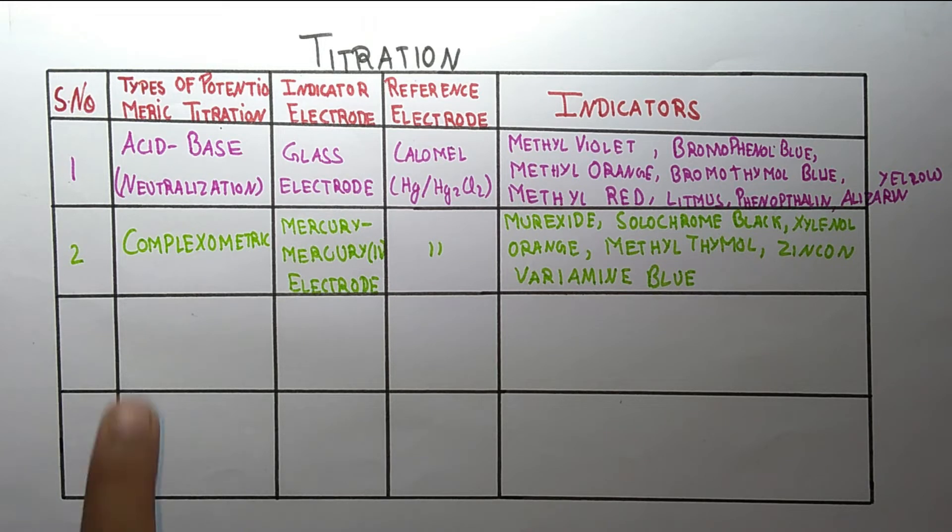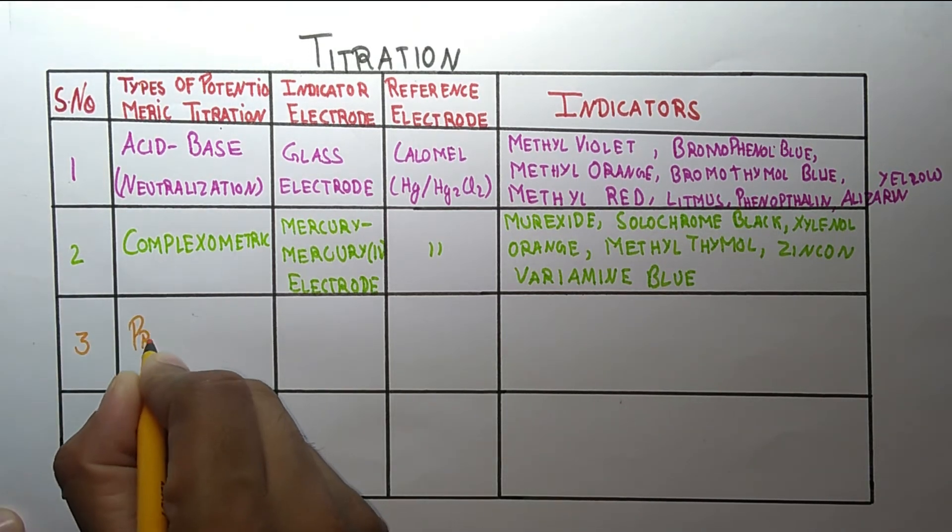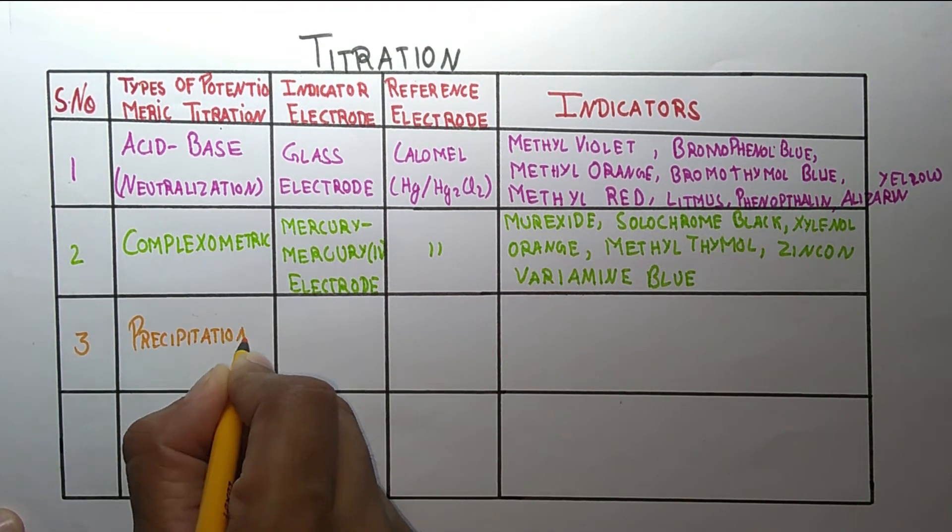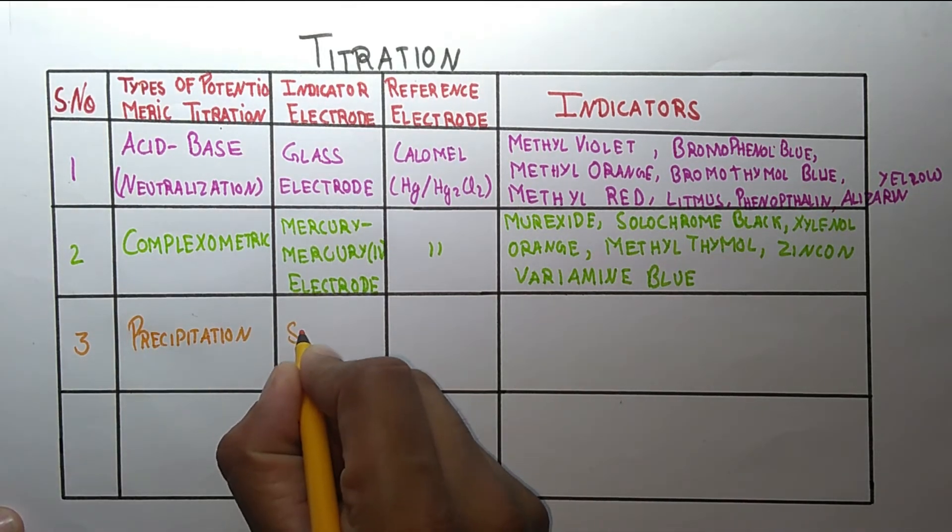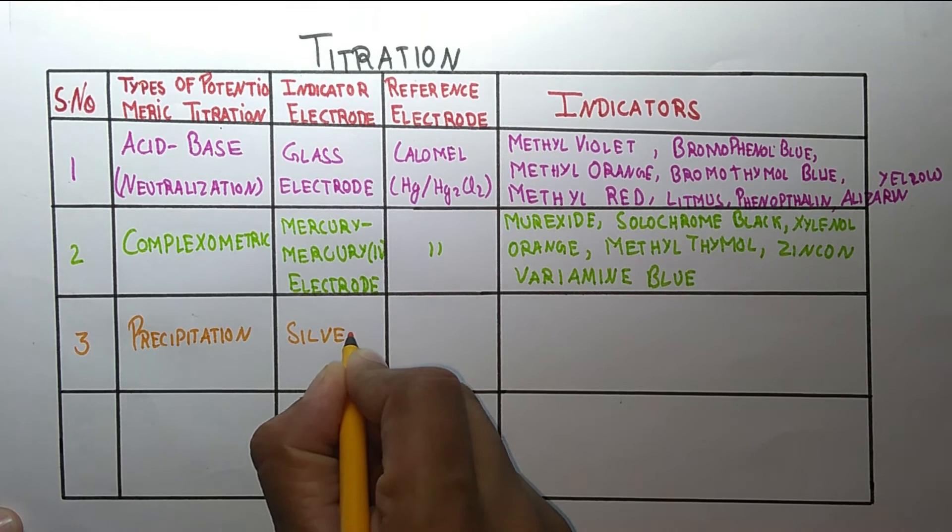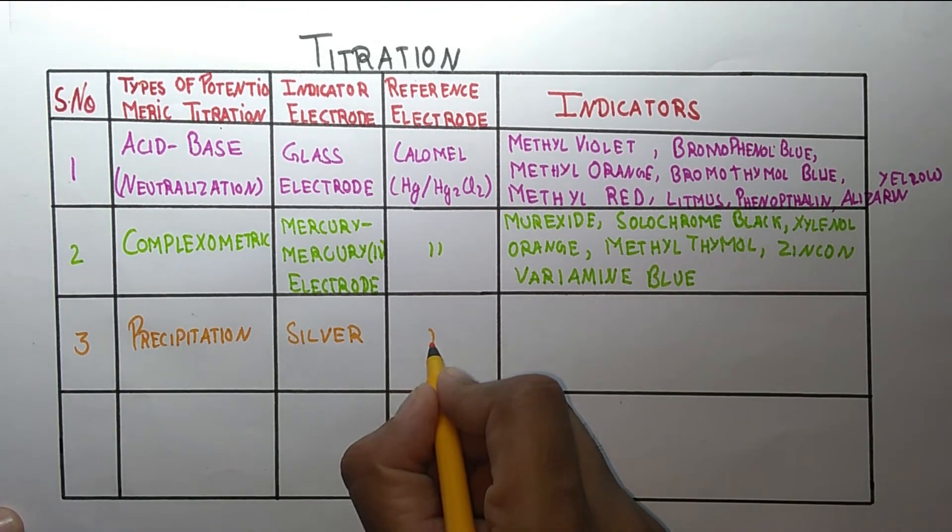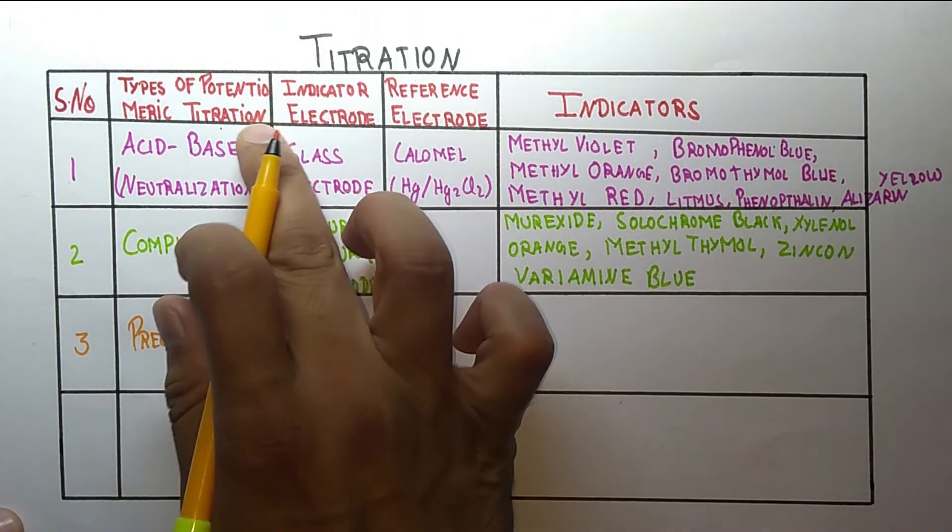So this is all about the complexometric titration. Now coming on the third type of titration, that is precipitation titration. In this we use indicator electrode of silver, and the reference electrode is the same as in both of these.